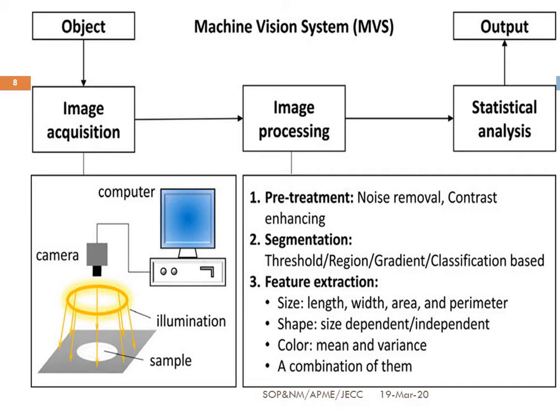In image processing, we carry out three steps. First is pre-treatment: taking the input from the image acquisition system and adjusting contrast, brightness, and performing noise removal. Next is segmentation and thresholding: grouping images by size, shape, or design. Third is feature extraction: depending on size, length, width, area, and perimeters, as well as shape and color, we extract features of the input image. Finally, statistical analysis compares all given inputs with the acquired output, and the comparison value is displayed on the computer as output.